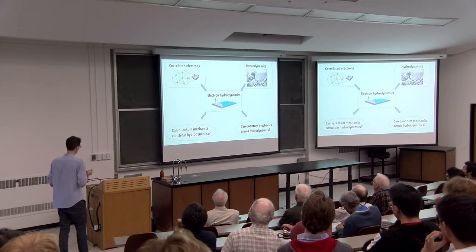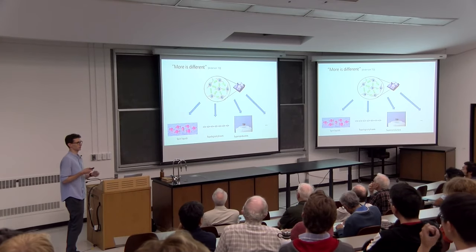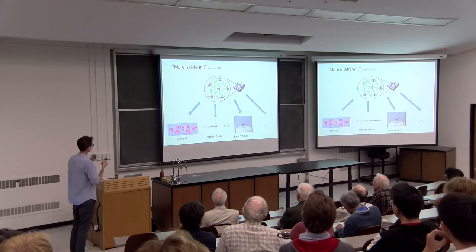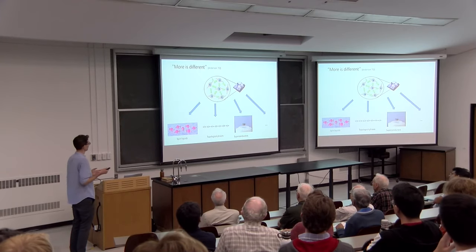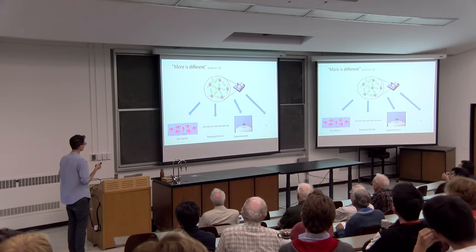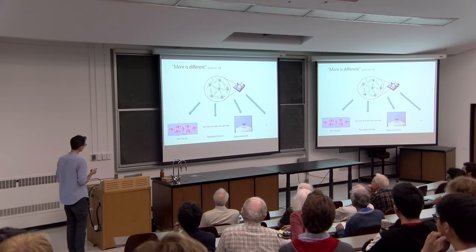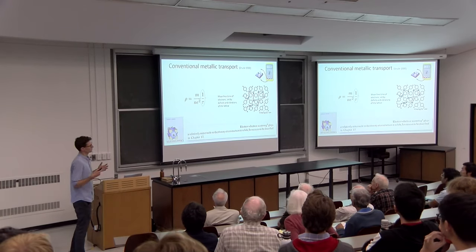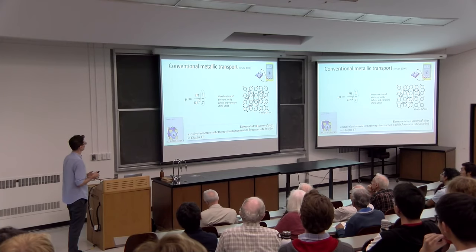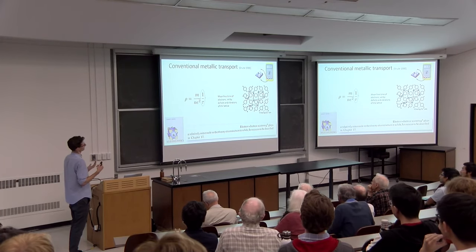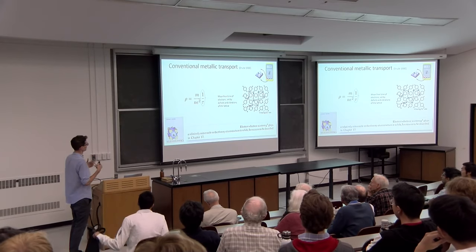Let me start with correlated electrons. In a solid, we have a lot of quantum particles interacting with each other. Most of what we do as theorists in this field is trying to guess what the collective behavior will be as a phase. In certain cases, it leads to very exotic and unusual types of phases, like spin liquids, topological phases, and superconductors. One of the most natural ways of probing a solid-state system is to measure its transport properties, and one of the simplest is the resistivity. As theorists, we spend a lot of time predicting and calculating these transport properties because they are natural things to compare with experiments.